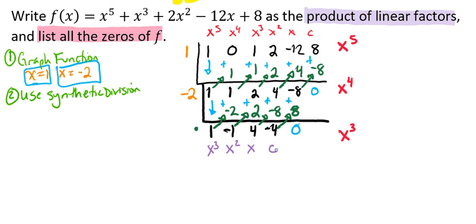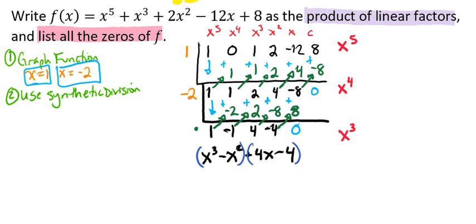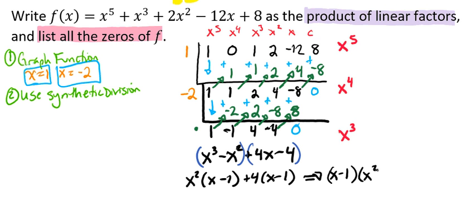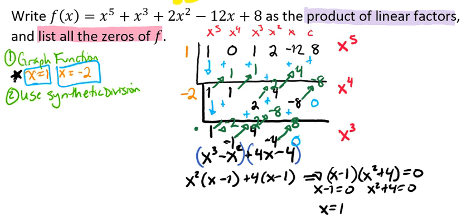We now have a cubic we can factor. Rewriting it as x to the 3rd minus x squared plus 4x minus 4, we can factor by grouping: taking out x squared gives x squared times (x minus 1), and taking out 4 gives 4 times (x minus 1). So this factors as (x minus 1)(x squared plus 4). Setting each factor to zero: x equals 1 — confirming the repeated root — and from x squared plus 4 equals 0, we get x squared equals negative 4, so x equals plus or minus 2i.